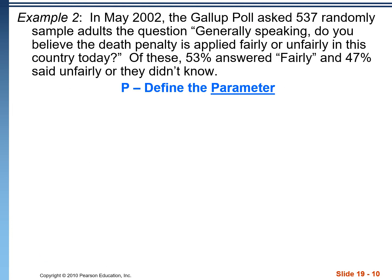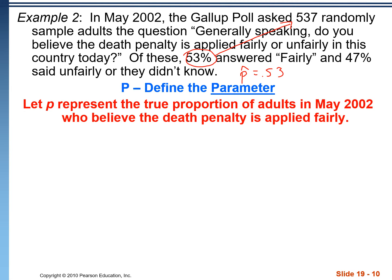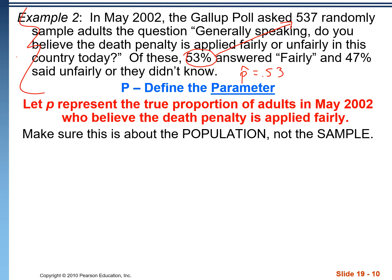First, define the parameter. The 53% up here is a statistic based on a random sample of 537 adults — we'd write P-hat equals 0.53. If we took another sample of 537 adults, we'd likely get something different, because statistics vary with samples while parameters do not. There's some proportion of adults in the country who believe the death penalty is applied fairly — that's what we're estimating. So we write: let P represent the true proportion of adults in May 2002 who believe the death penalty is applied fairly. Make sure it's clear this is about the population, not the sample.